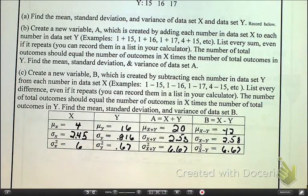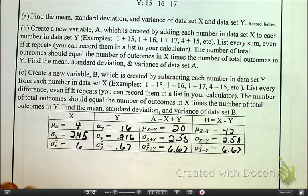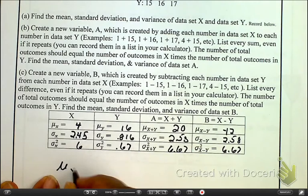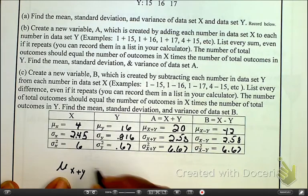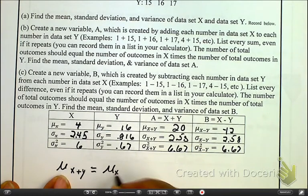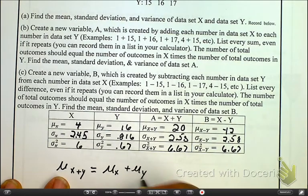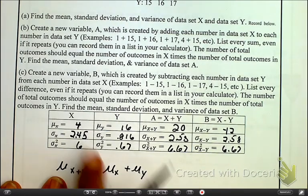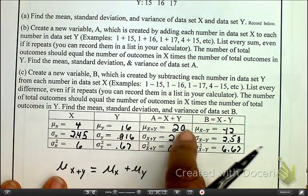Okay, so guys, it looks like to me, when I had μ of x plus y, that's nothing but equal to μ of x plus μ of y. That's all that happened. Look at 4 plus 16 equals 20.